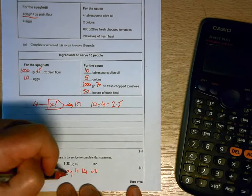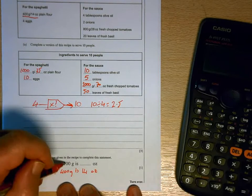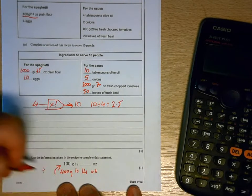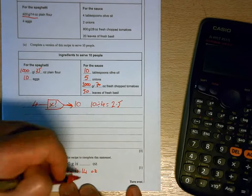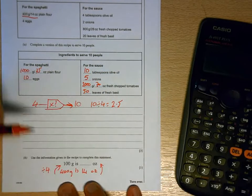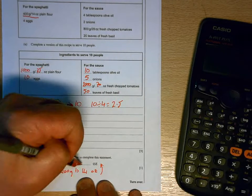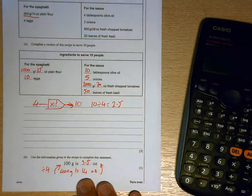So, in order to reduce from 400 to 100, I have to divide by 4. So I have to divide 14 by 4. And when I divide 14 by 4, I get half of it would be 7, half again, 3.5 ounces.